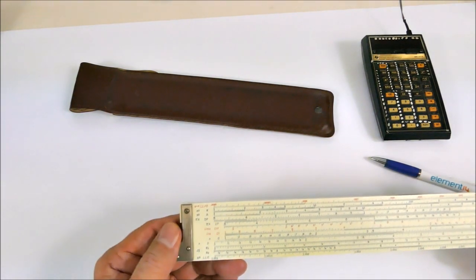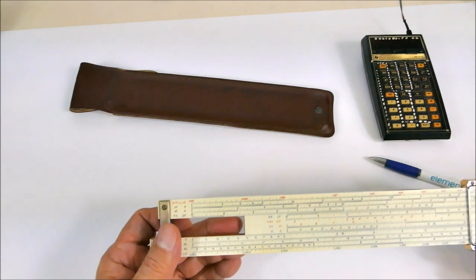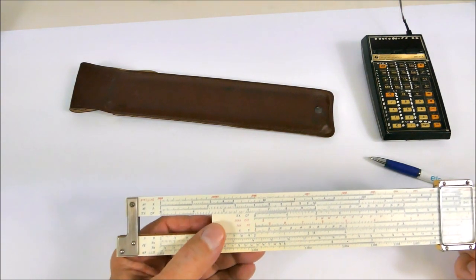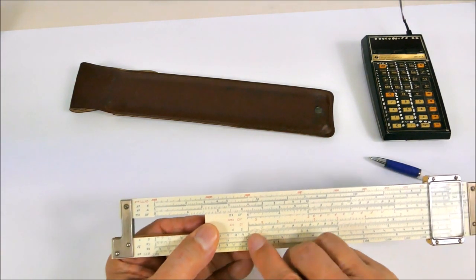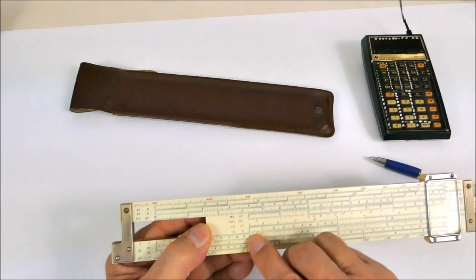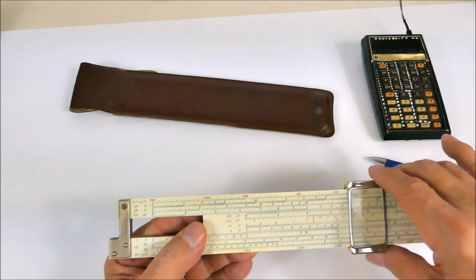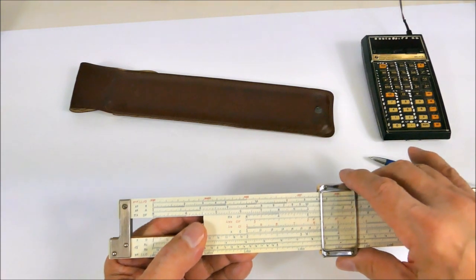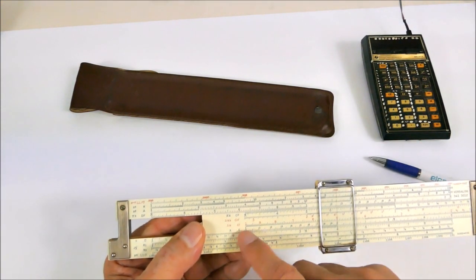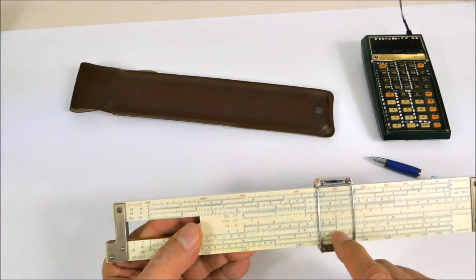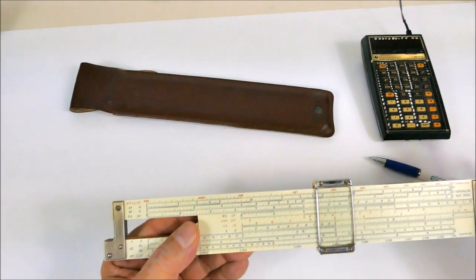So how does this work? Well, we have the index of one at the end here, and we can move that to whatever number we'd like to multiply by. For example, if we move it to two, which is on the D scale, and we can move this slider to whatever we want to multiply by.